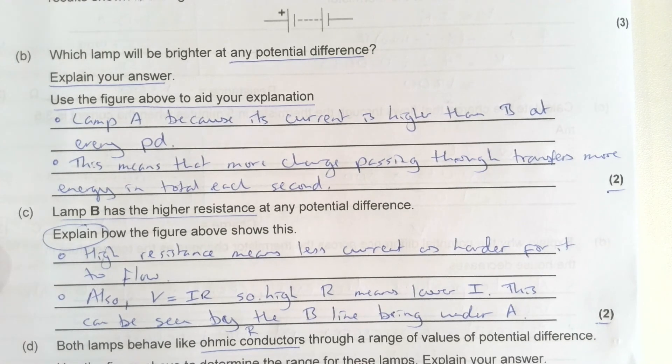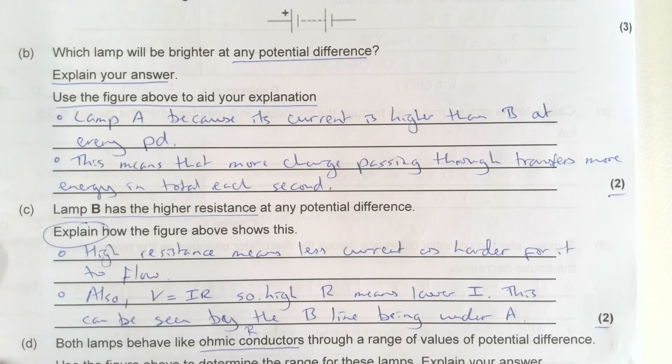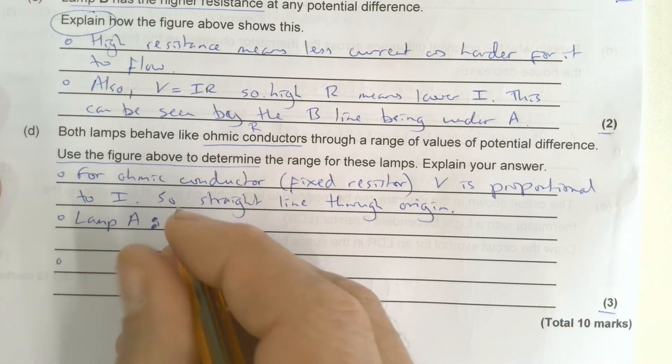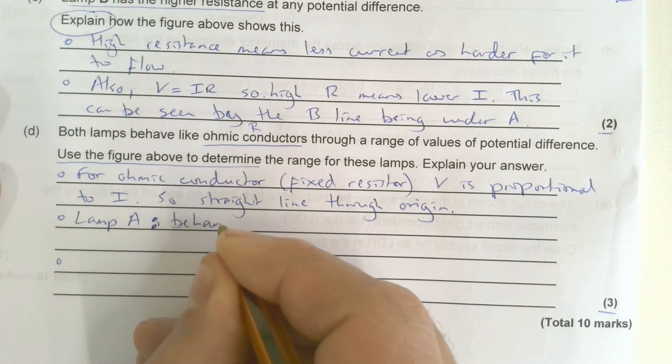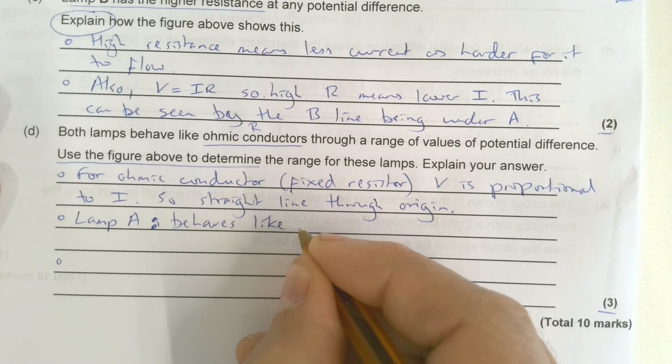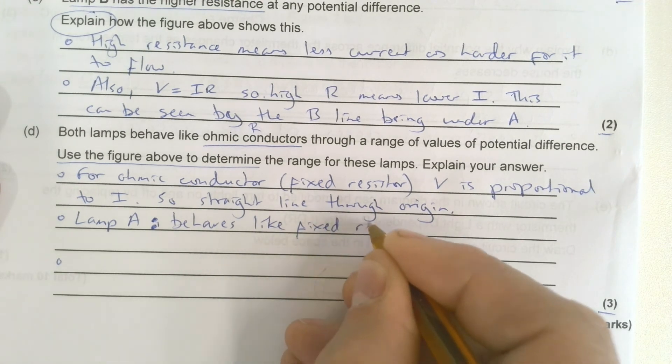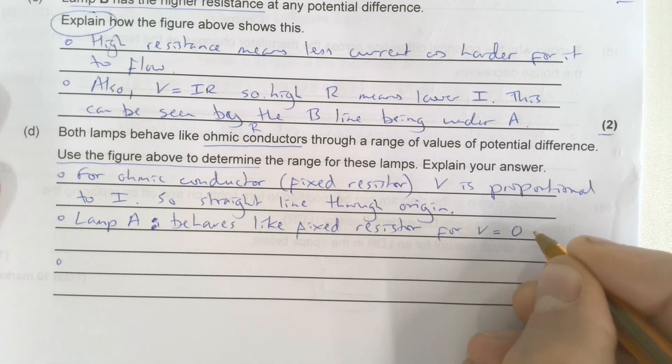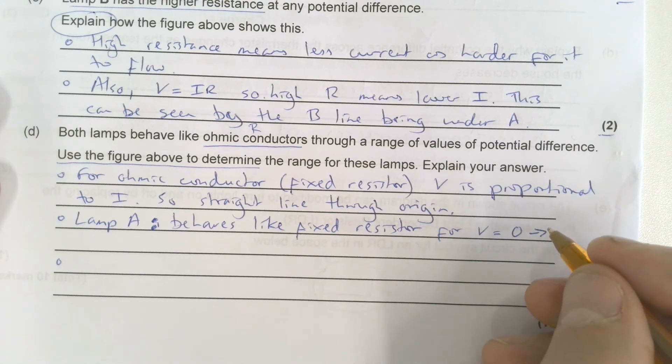So the range for these lamps, lamp A. I'll put a colon there. Lamp A is and behaves like a fixed resistor for V equals zero up to a grand total of 1.2 volts.